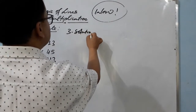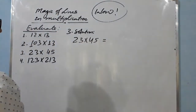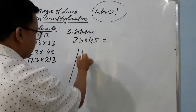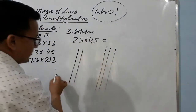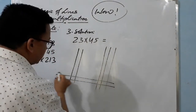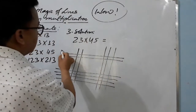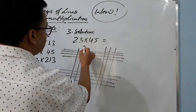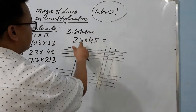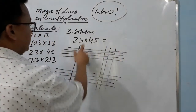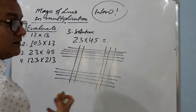Now let's solve 23 times 45. Draw two lines for '2', then three lines for '3'. Now from the other direction, draw four lines for '4', and five lines for '5'. Let me clarify: two lines, then three lines, then four lines, then five lines. Make sure you count the lines correctly, otherwise you won't get the right answer.